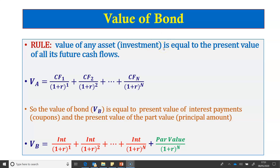There are three important things we need to know for valuation. First, we need to know the cash flows from the investment or asset. Second, we need to know the timings of those cash flows. And third, we need to know the required rate of return, or the discount rate, to discount those future cash flows. This is stated in the mathematical representation where the value of asset A equals the present value of all future cash flows discounted at the required rate of return R.